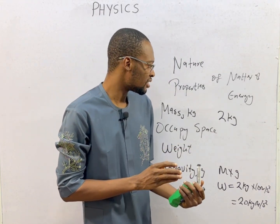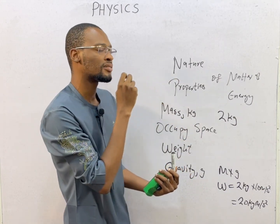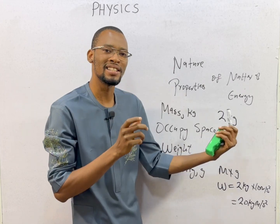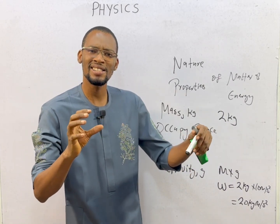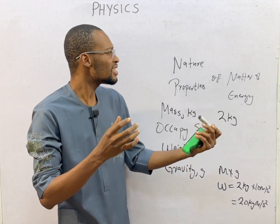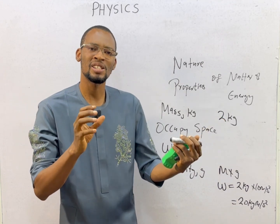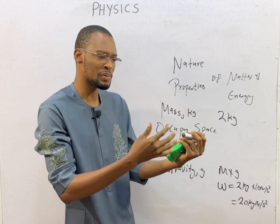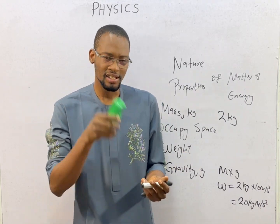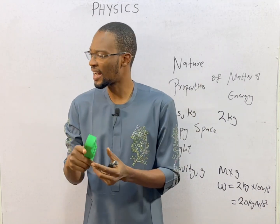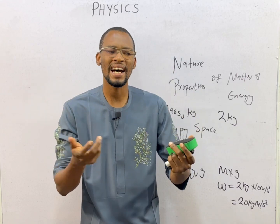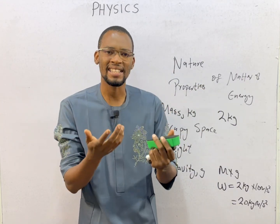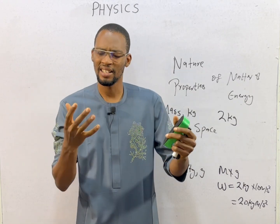Ladies and gentlemen, matter is anything that has mass and occupies space. How about energy? Energy is generally referred to as antimatter — it's anything that does not have mass and does not occupy space. Examples of matter include your board, your car, water, air — all these are matter. Examples of energy include light and sound — these do not have mass.